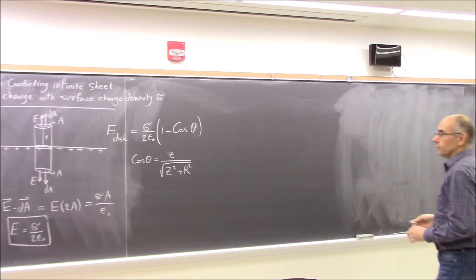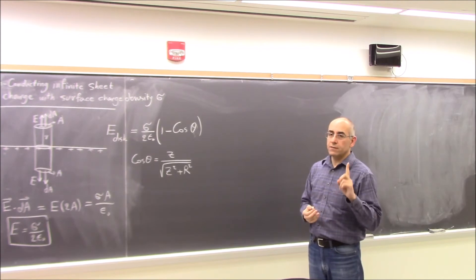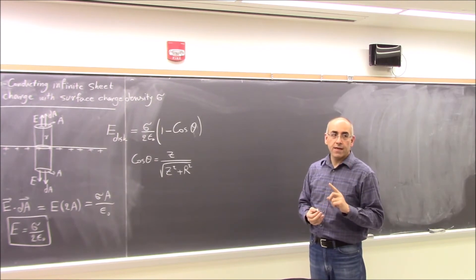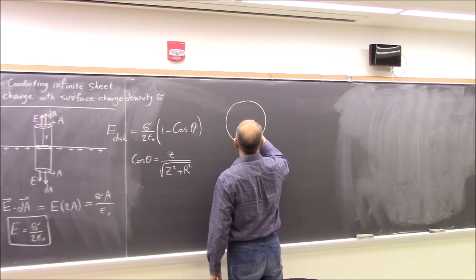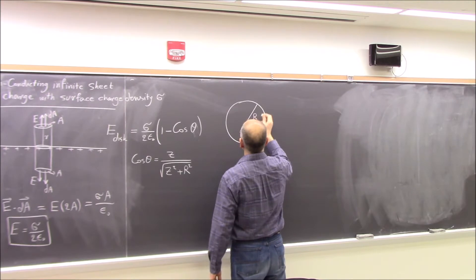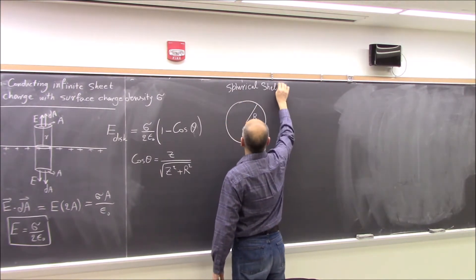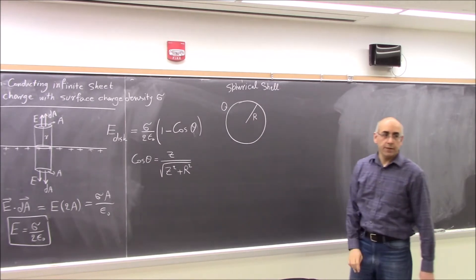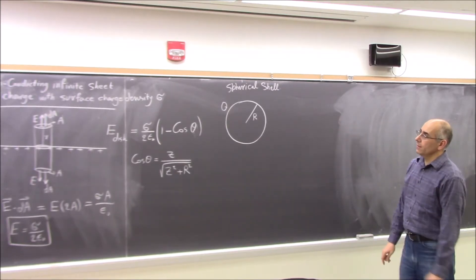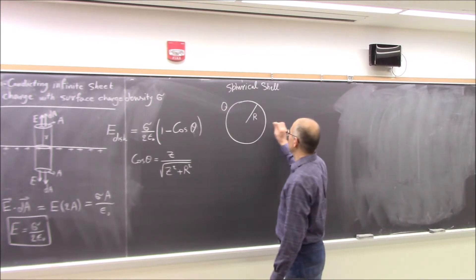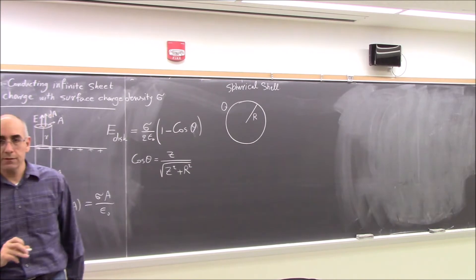Now we're going to talk about spherical symmetry. Let's start with the spherical shell that has a uniform charge on the surface. It has radius R. The charge is only on the surface — there's nothing inside. The total charge is Q. And we want to find the electric field inside or outside. We already know the answer to this, but we want to use Gauss's law to do that.